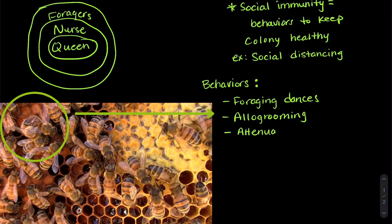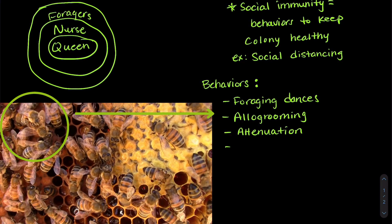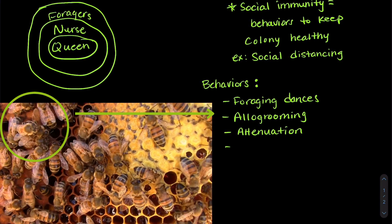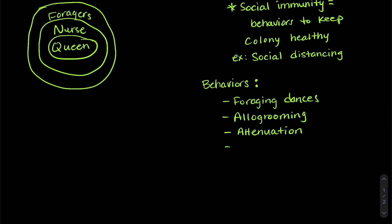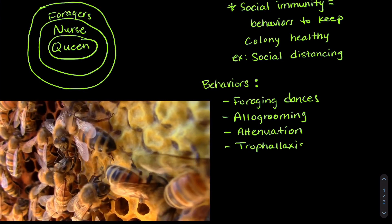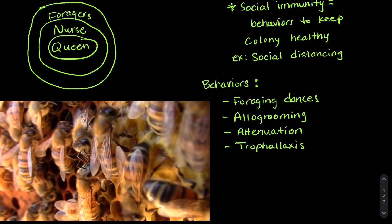The third behavior is called attenuation. This is when bees rub their antennae on other bees to help recognize nest mates. The last behavior is trophallaxis, which is where one bee gives food to another bee.